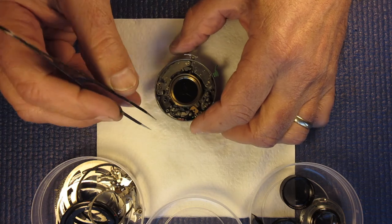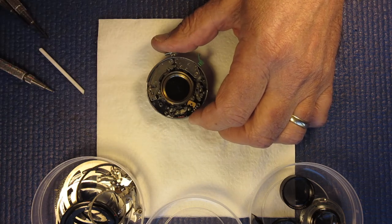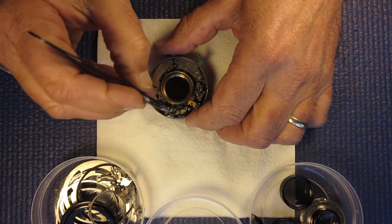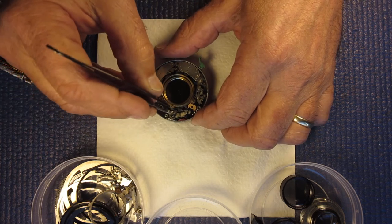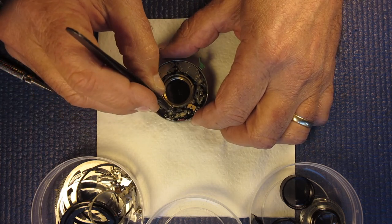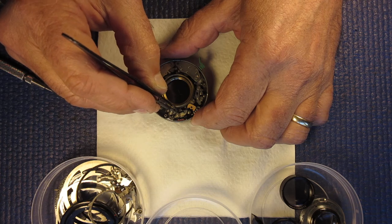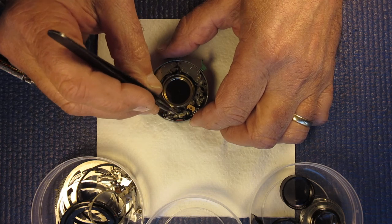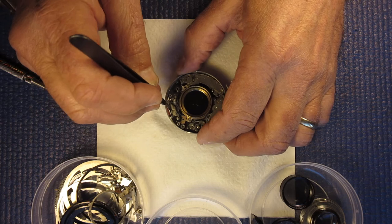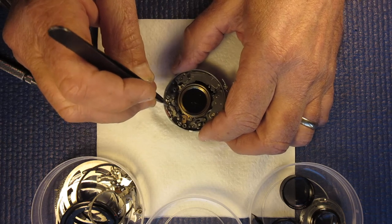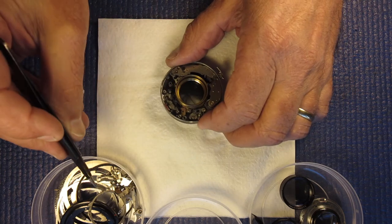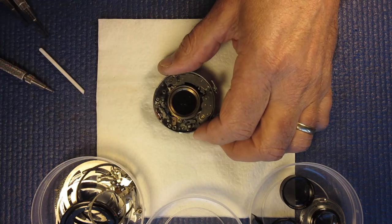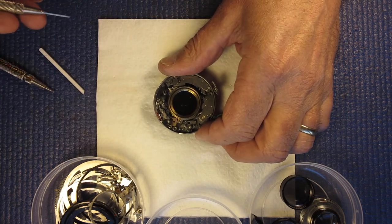Flash bulbs take a certain amount of time to come up to speed. And so typically you fired them earlier. So they got up to peak brilliance by the time the shutter was fully opened. So I'm unhooking a little spring there. That's quite fine. Easily lost. And like most springs it wants to get away. Make sure you don't let it.